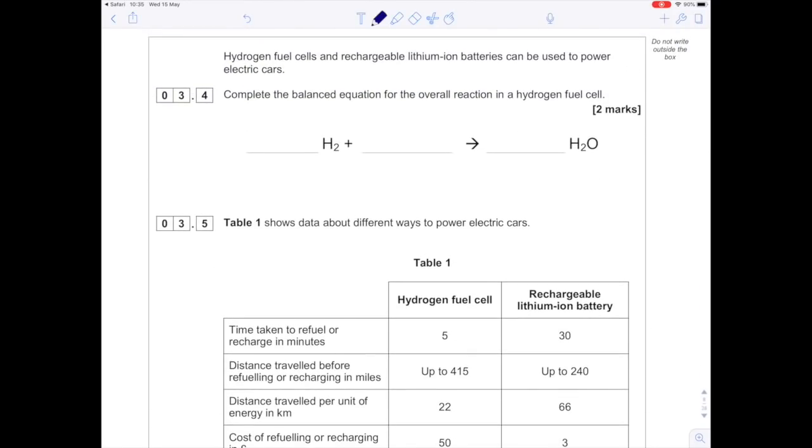Hydrogen fuel cells and rechargeable lithium ion batteries can power electric cars. Complete the balanced equation for the overall reaction in a hydrogen fuel cell. We have hydrogen reacting with oxygen (O2). I've got two oxygens on the left, only one on the right, so I put a 2 here. Now I have four hydrogens on the right, only two on the left, so I need a 2 here: 2H2 + O2 → 2H2O.